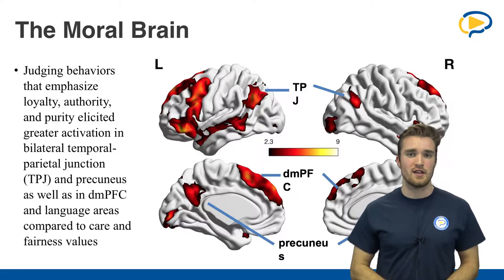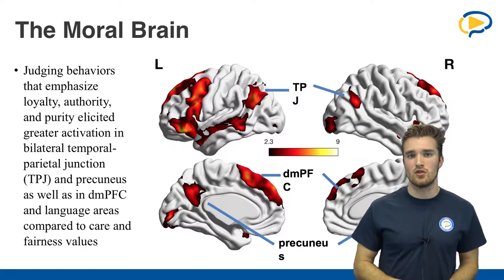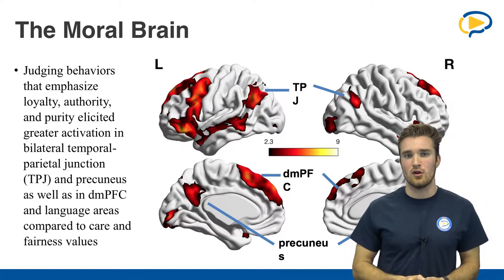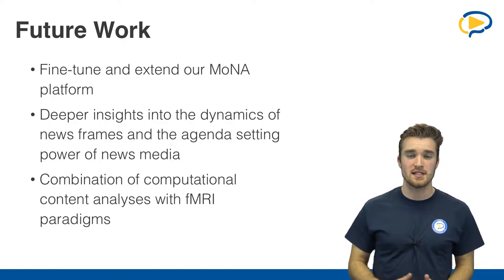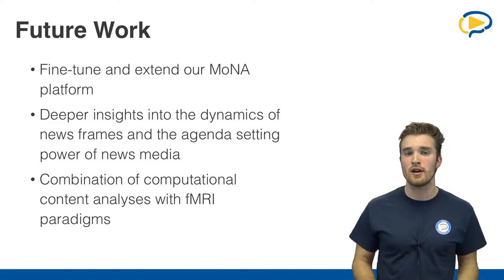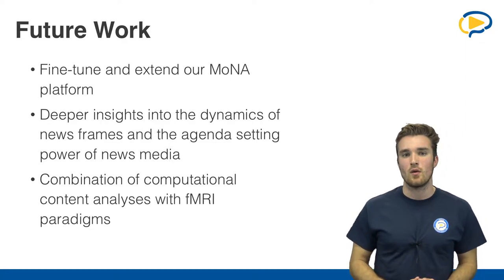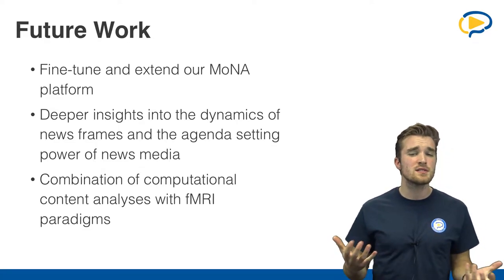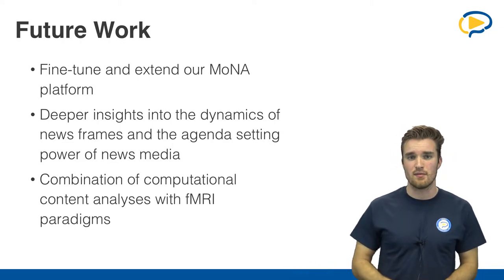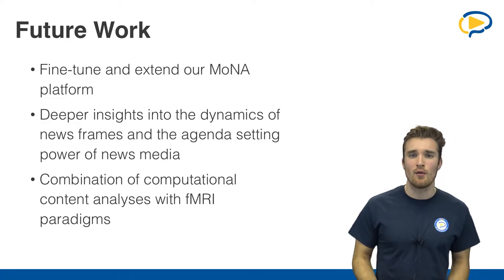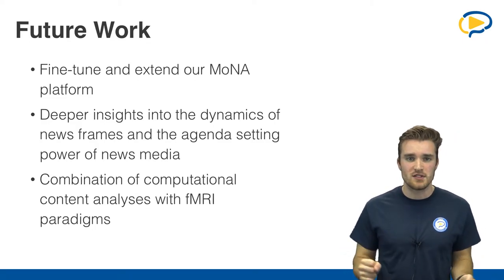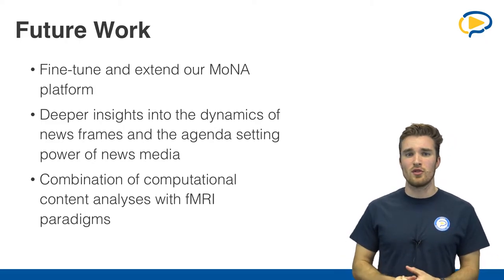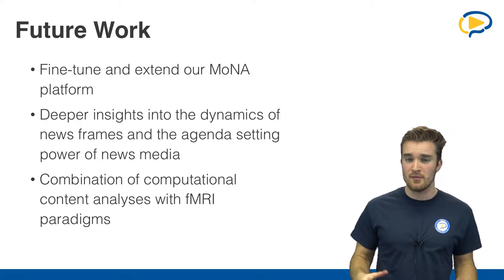How can we frame messages that appeal to certain groups that might have a conservative ideology? How can we frame messages to people that have a liberal ideology? Finally, I'd like to share some of our future ideas. We want to fine-tune and extend MONA — not just to code moral information in newspaper articles and movie scripts, but maybe even in political speeches or in books and novels. In the future, we also want to extend our MONA system to look at books, and we also want to learn about the relationship between events and news frames in the bigger picture.